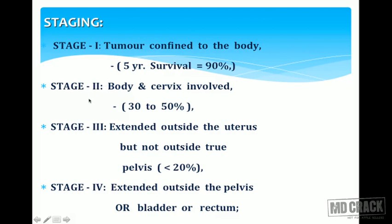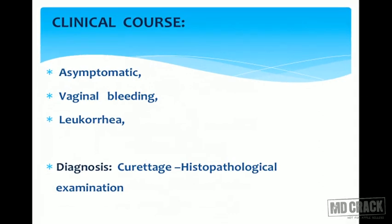The FIGO staging of endometrial carcinomas: Stage I — tumor confined to the uterine body, with very good 5-year survival rate, especially if limited to one-third of the myometrium. Stage II — body and cervix involved, around 30–50% 5-year survival. Stage III — extends outside the uterus but not outside the true pelvis, survival drops to less than 20%. Stage IV — extends outside the pelvis or involves adjacent organs like bladder and rectum, with very poor prognosis.